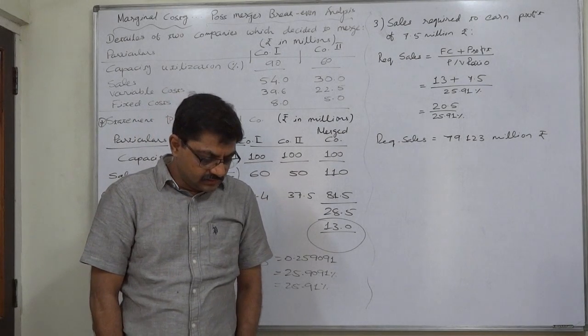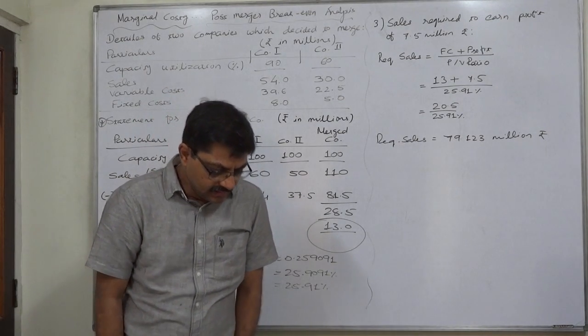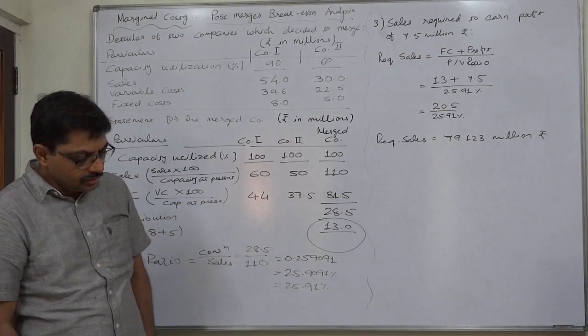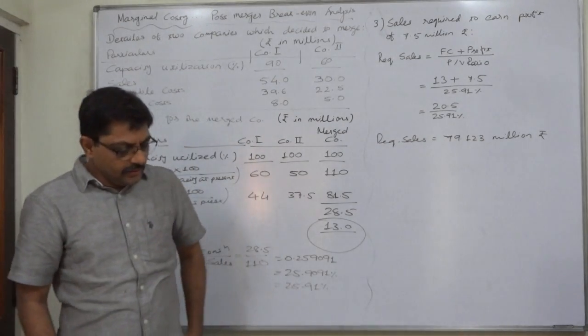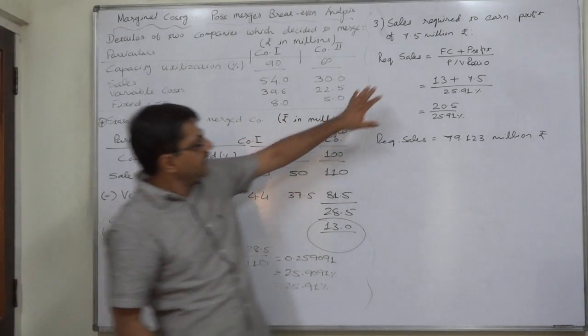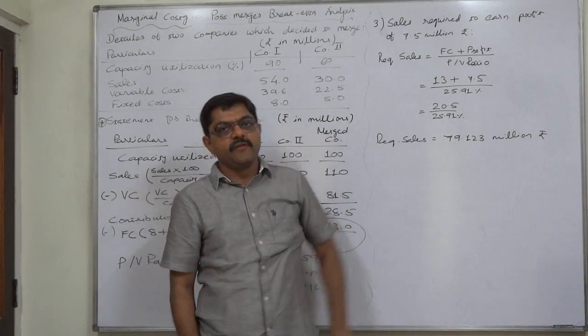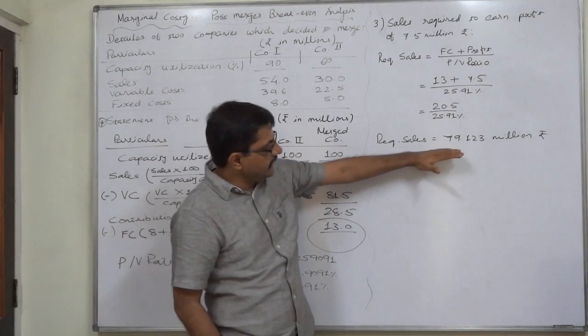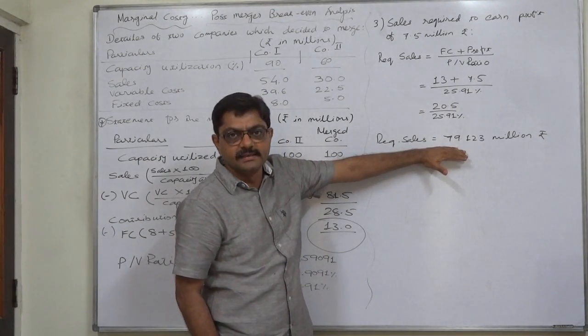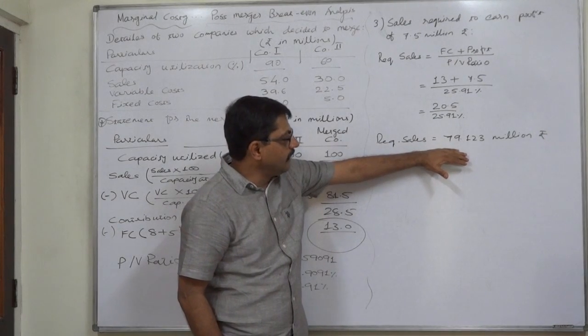To sustain an increase of 5 percent in fixed cost when the company is making 7.5 million rupees of sales. That means if the company is already making this much sales and now we come to know that the fixed cost increases by 5 percent,